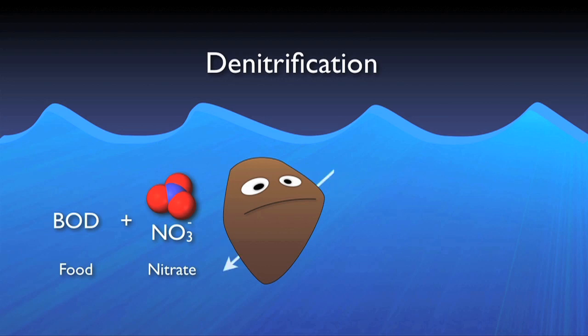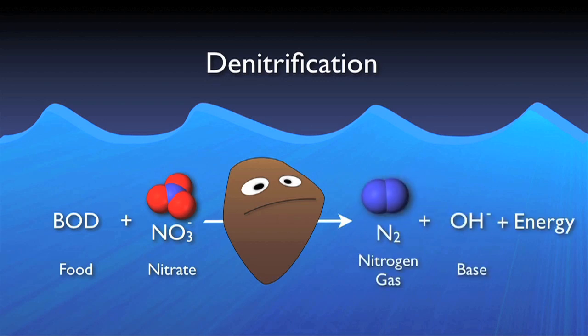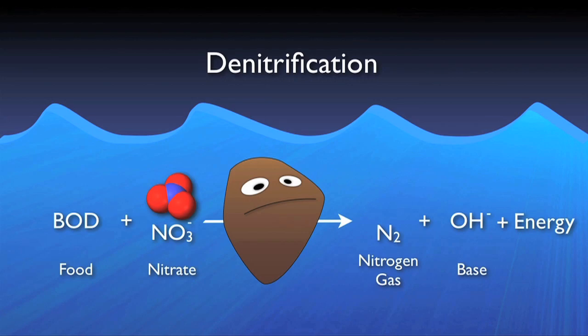These bugs take the BOD and nitrate to produce energy, base, and nitrogen gas. The base is actually very useful in buffering the acid produced during nitrification. The nitrogen gas then floats in tiny bubbles to the surface and into the atmosphere. Though great in the biological basin, denitrification in a clarifier can result in undesirable floating sludge.